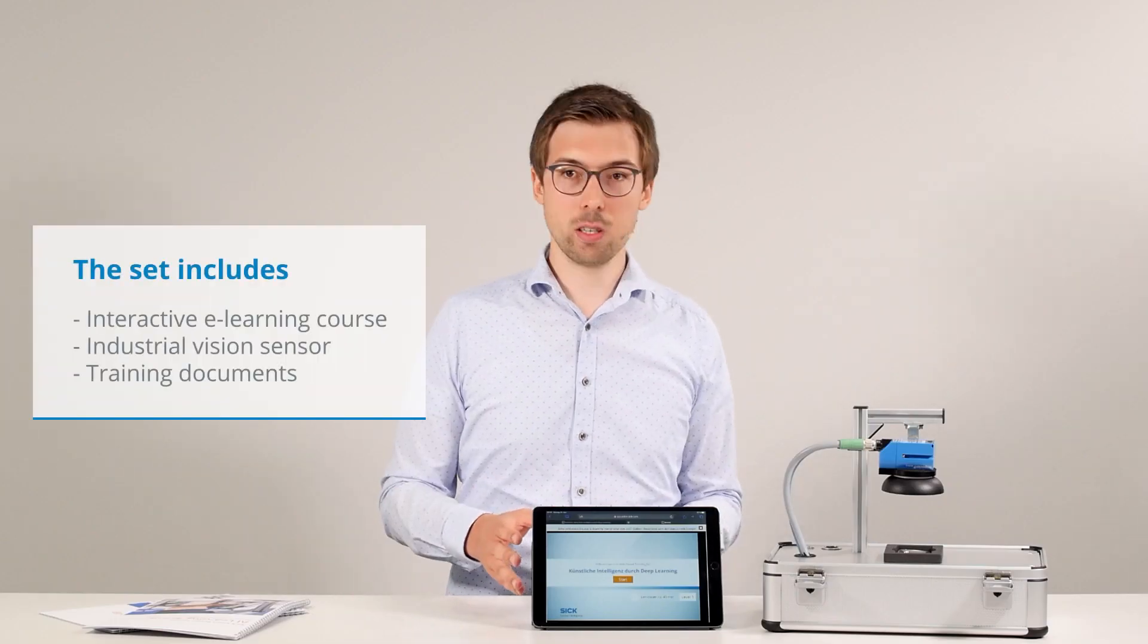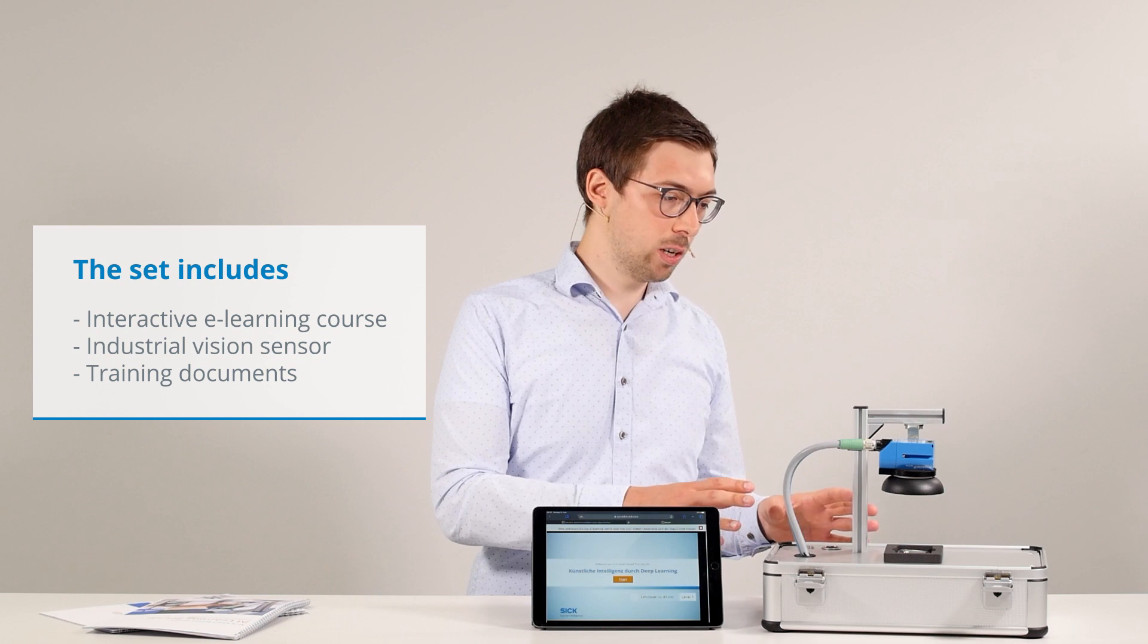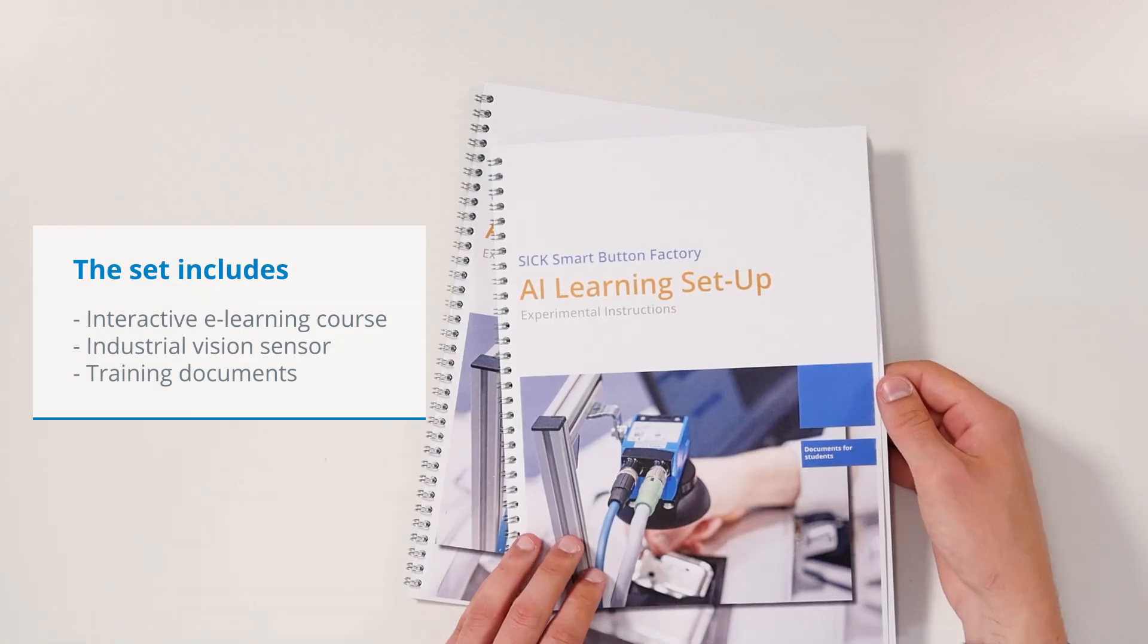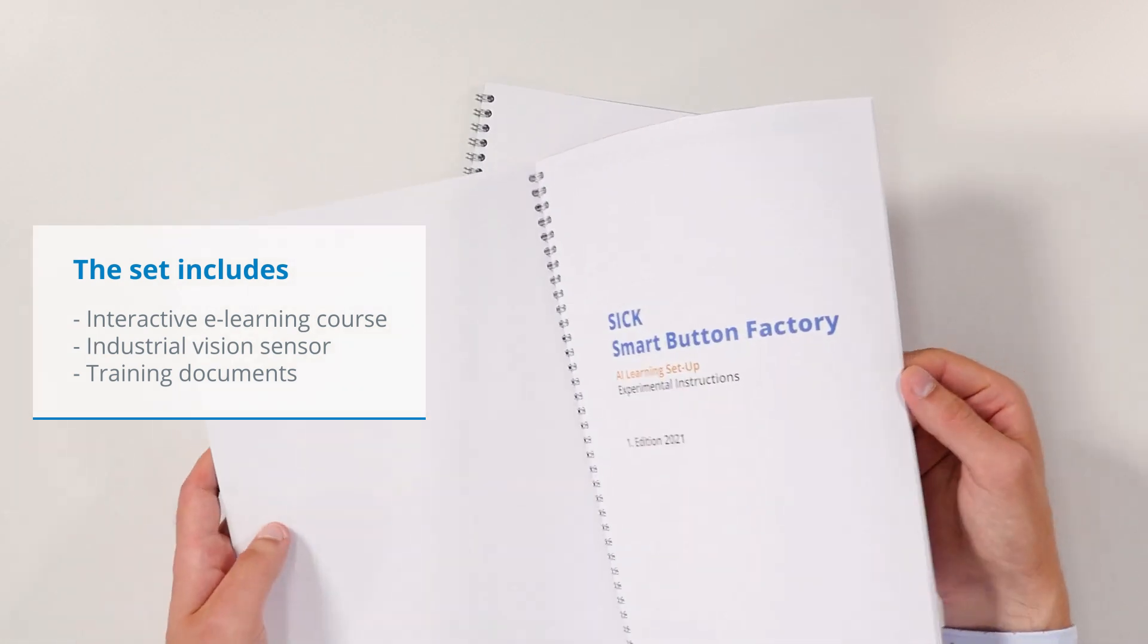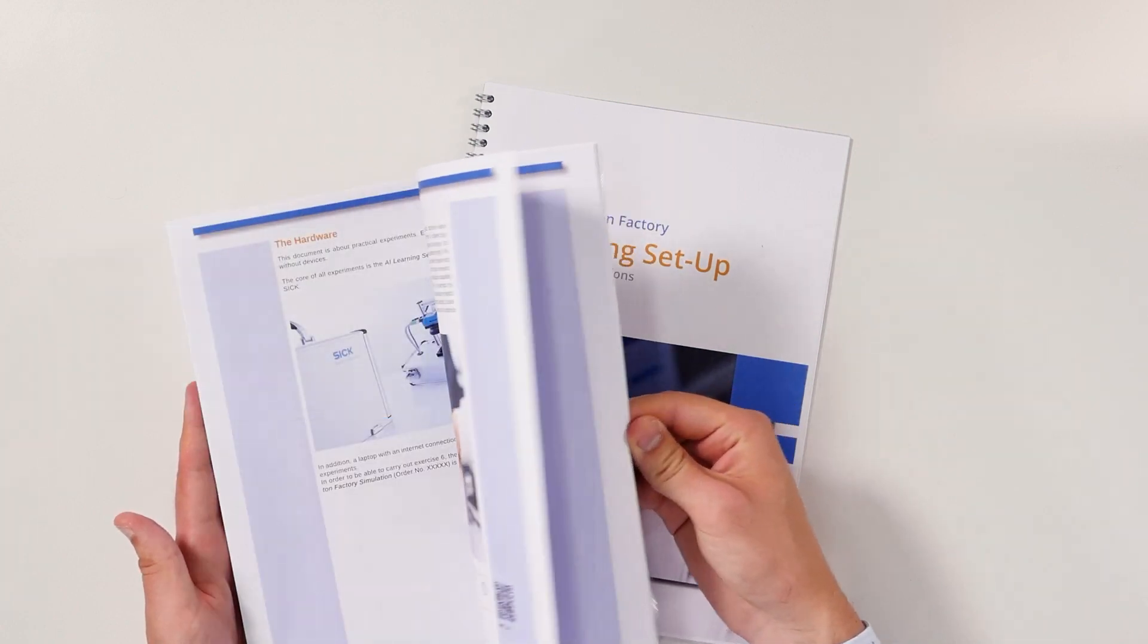The training consists of three integral parts: an interactive e-learning course, a hardware suitcase that houses a vision sensor, and additional training documents that help carry out face-to-face trainings.